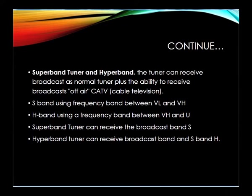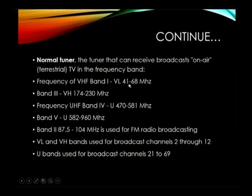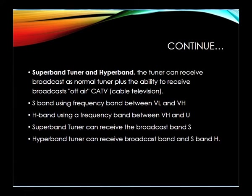The super band and hyper band tuners have higher frequency bands than the normal tuner. They can receive normal broadcasts plus cable television. S band uses frequencies between VL and VH (41 to 68 MHz and 174 to 230 MHz). H band uses frequencies between VH and U. The super band tuner can receive S band, while the hyper band tuner can receive broadcasts plus S band and H band. These tuners can also broadcast in a higher range band compared to the normal tuner.